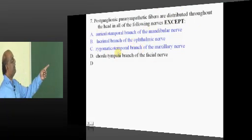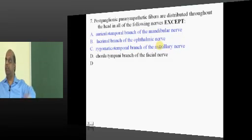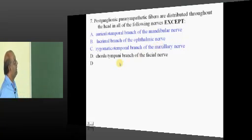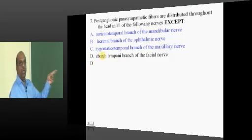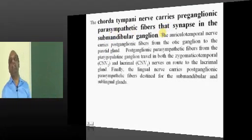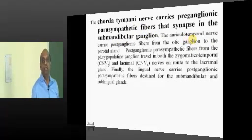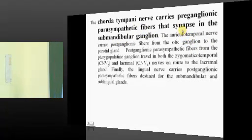Now post-ganglionic fibers, where are they basically located? Auriculotemporal branch, lacrimal branch and zygomaticotemporal branch, they are all carrying the post-ganglionic parasympathetic fibers. Whereas chorda tympani basically carries the pre-ganglionic parasympathetic fibers which will reach the submandibular ganglion.